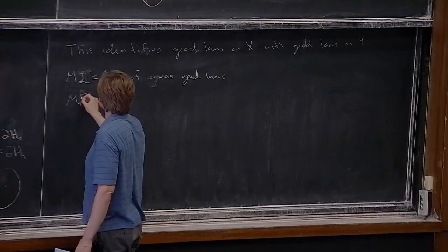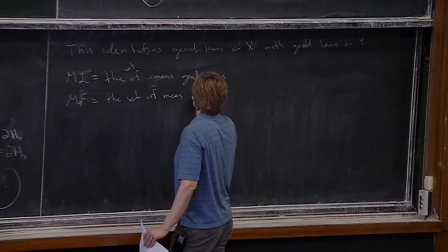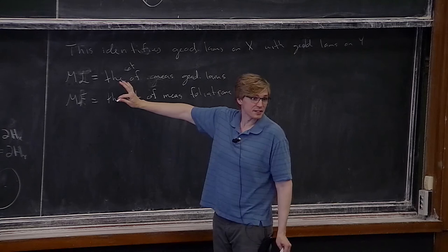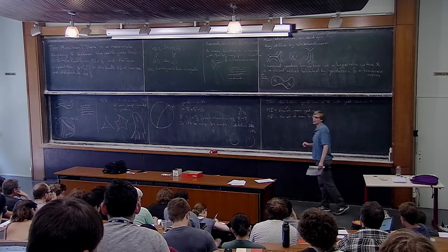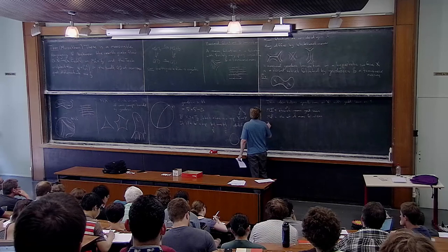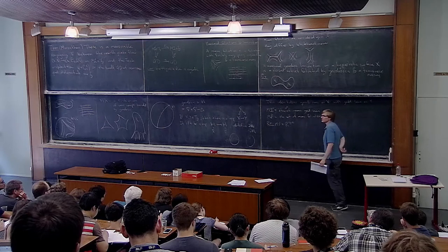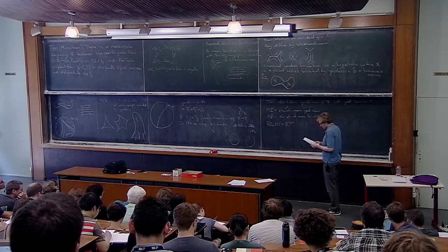MF denotes the space of measured foliations, and ML denotes the space of measured geodesic laminations. We want to see that these are canonically identified with each other. A remark: MF is homeomorphic to ℝ^(6g−6). They actually have a natural topology and are very nice spaces.